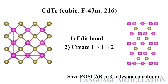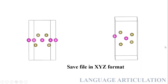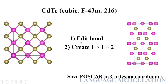Cadmium telluride (CdTe) is a cubic structure, and somebody asked me to create a monolayer of it. So the procedure I know I will share, and if there is some problem please let me know. You have to again edit bonds, create a 1×1×2 supercell, and you will see the structure becomes very difficult to recognize. But if you look, the middle portion is your monolayer.